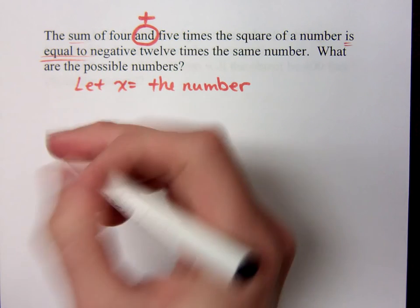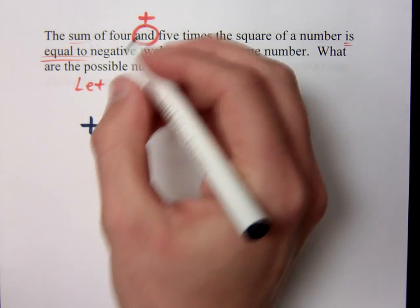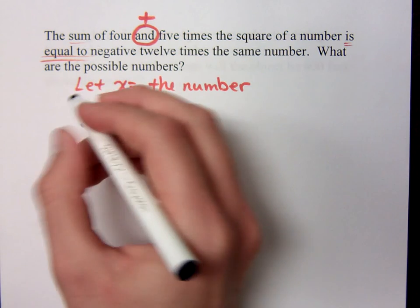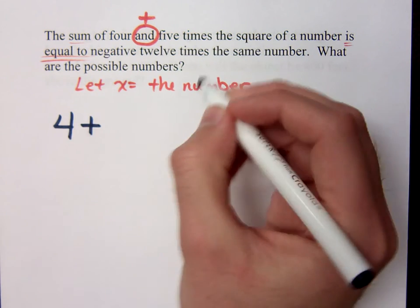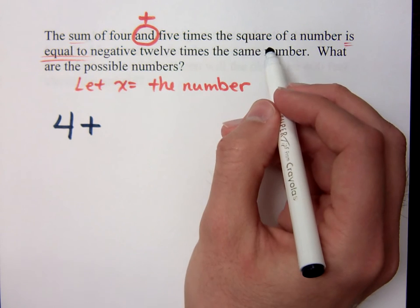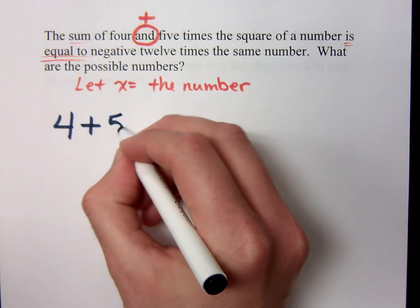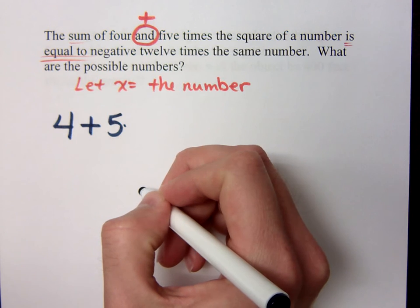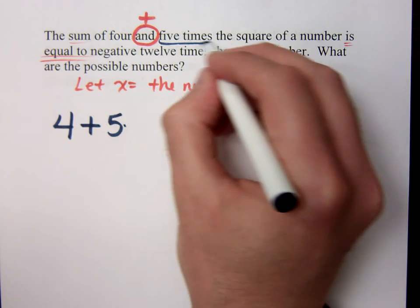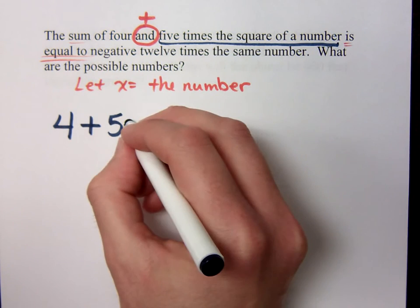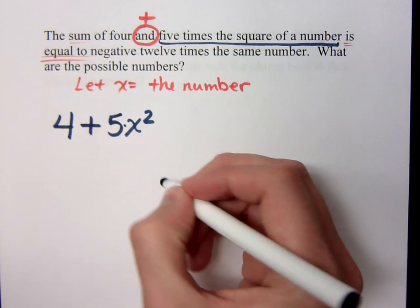Well, what are the two things that I'm adding? Before I see the word 'and', I see the number 4, so I can write 4. After that is the expression 5 times the square of a number. So that just means 5 times the square of a number. Well, to say the square of a number is just going to be x squared.